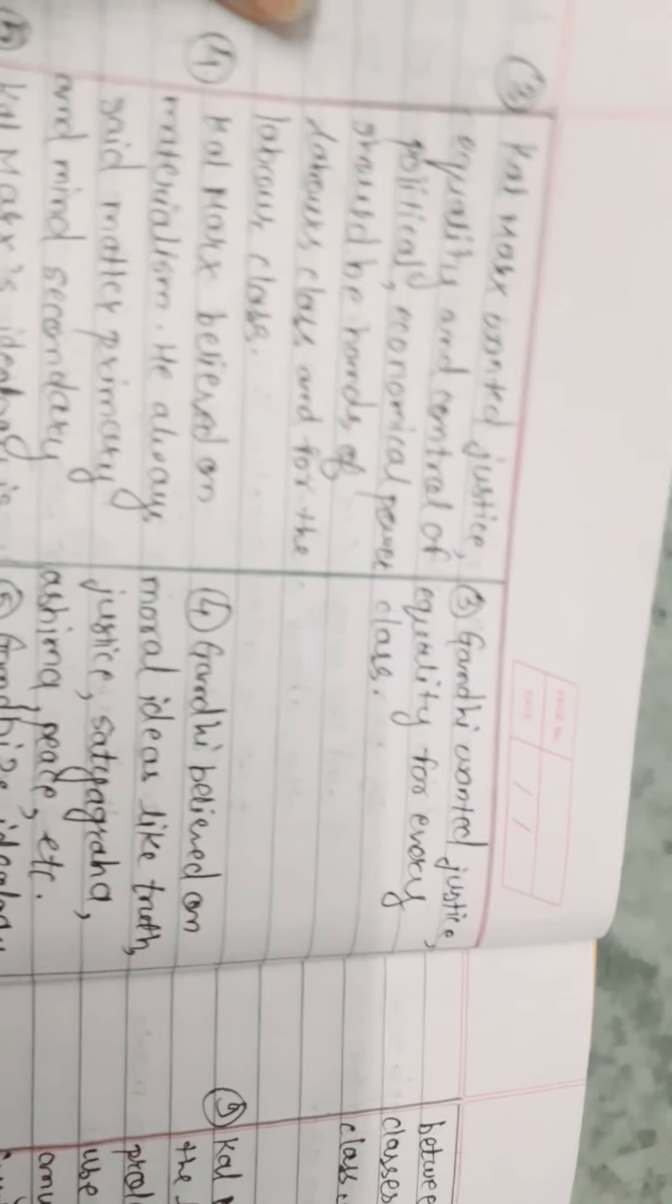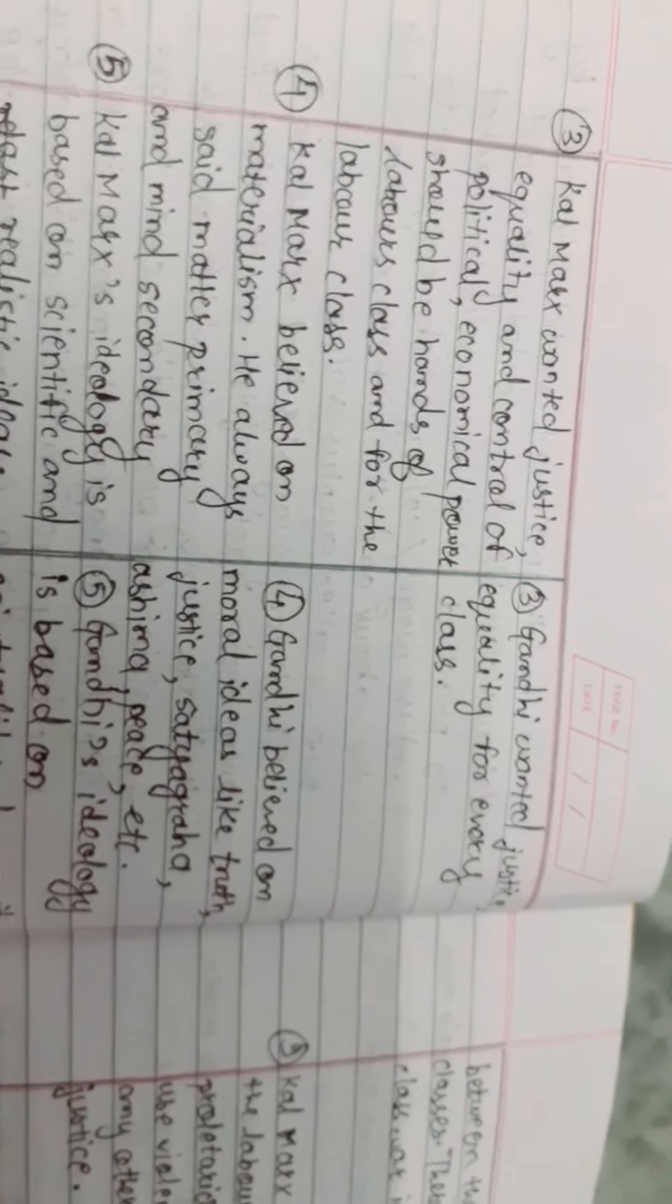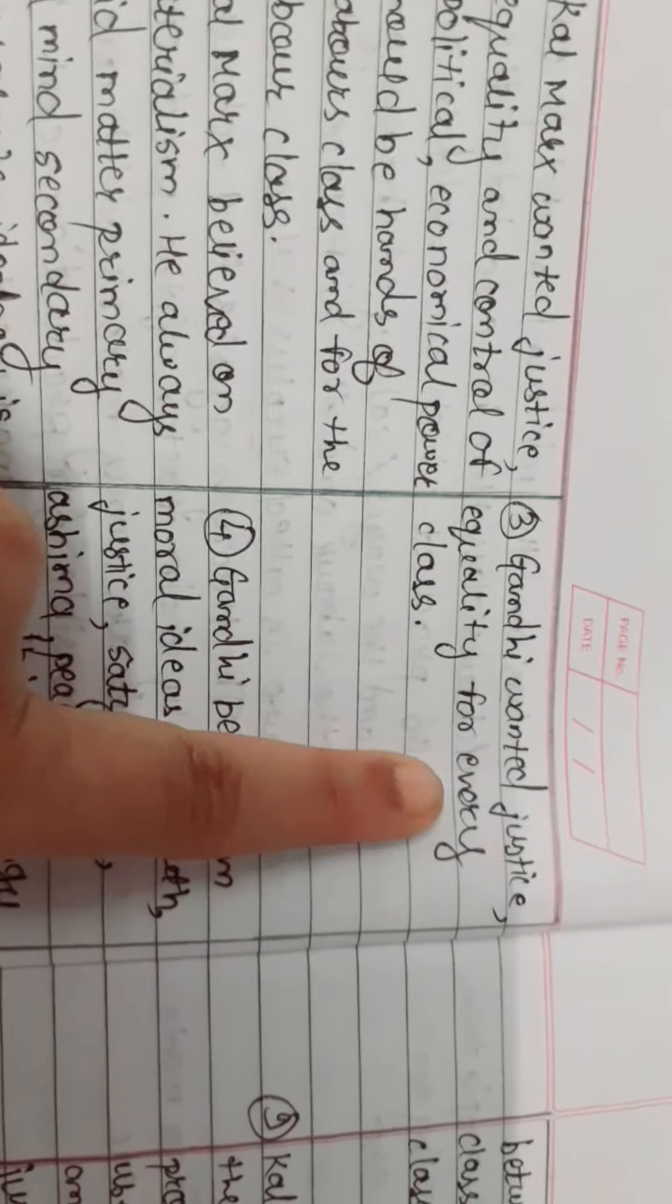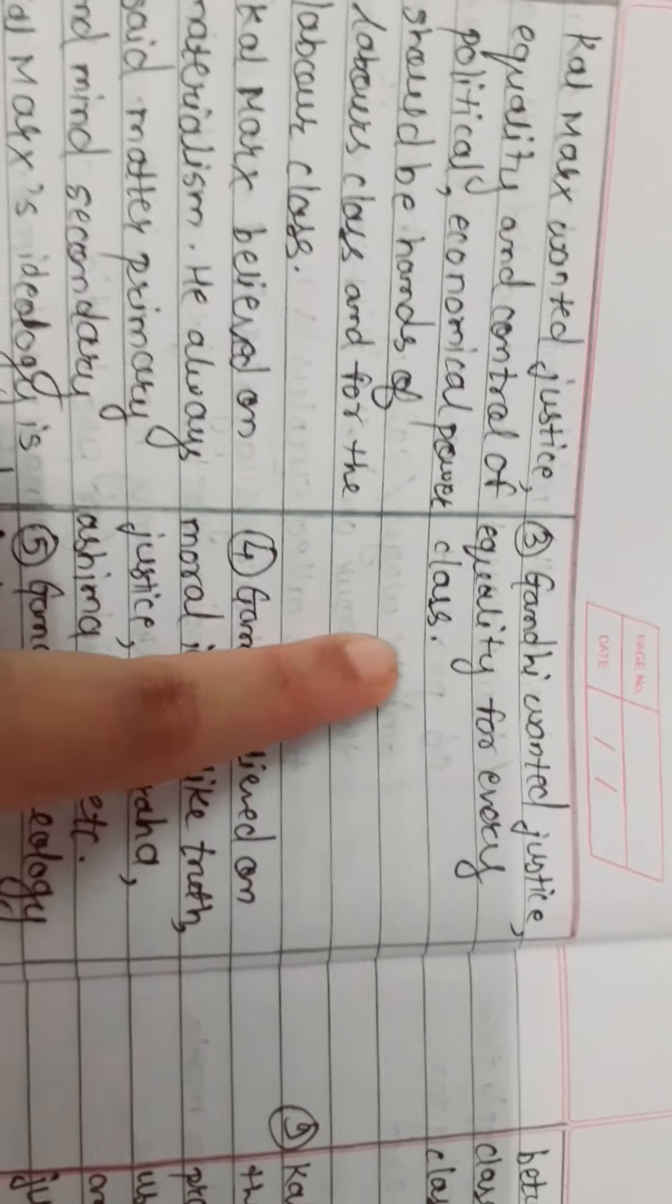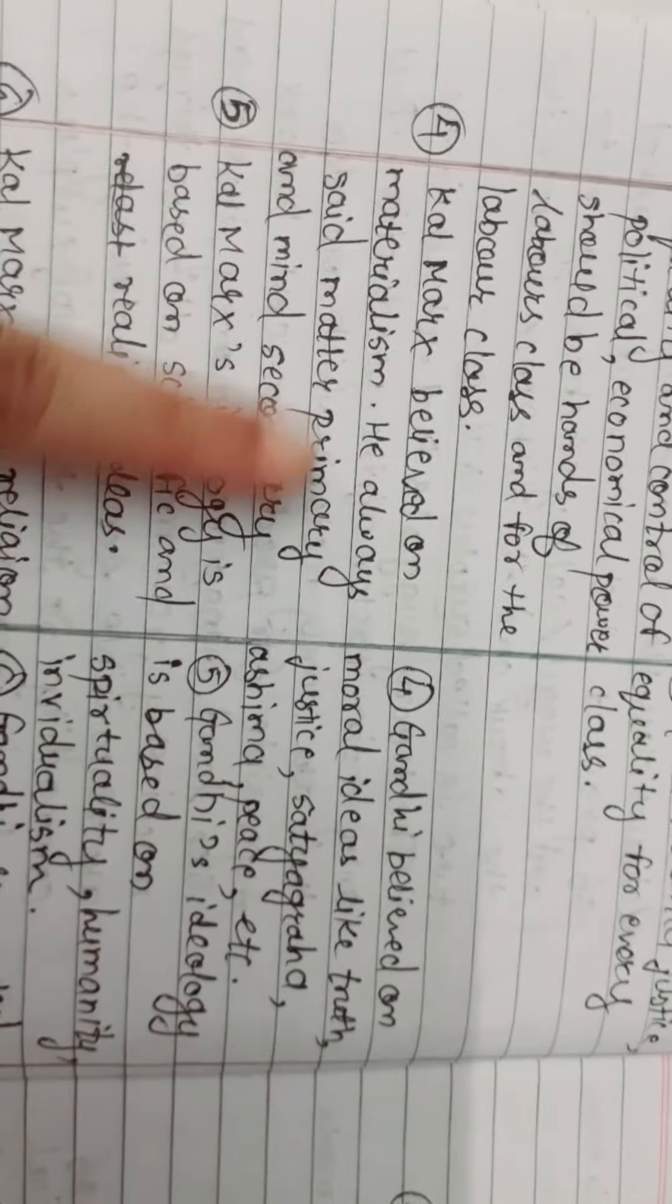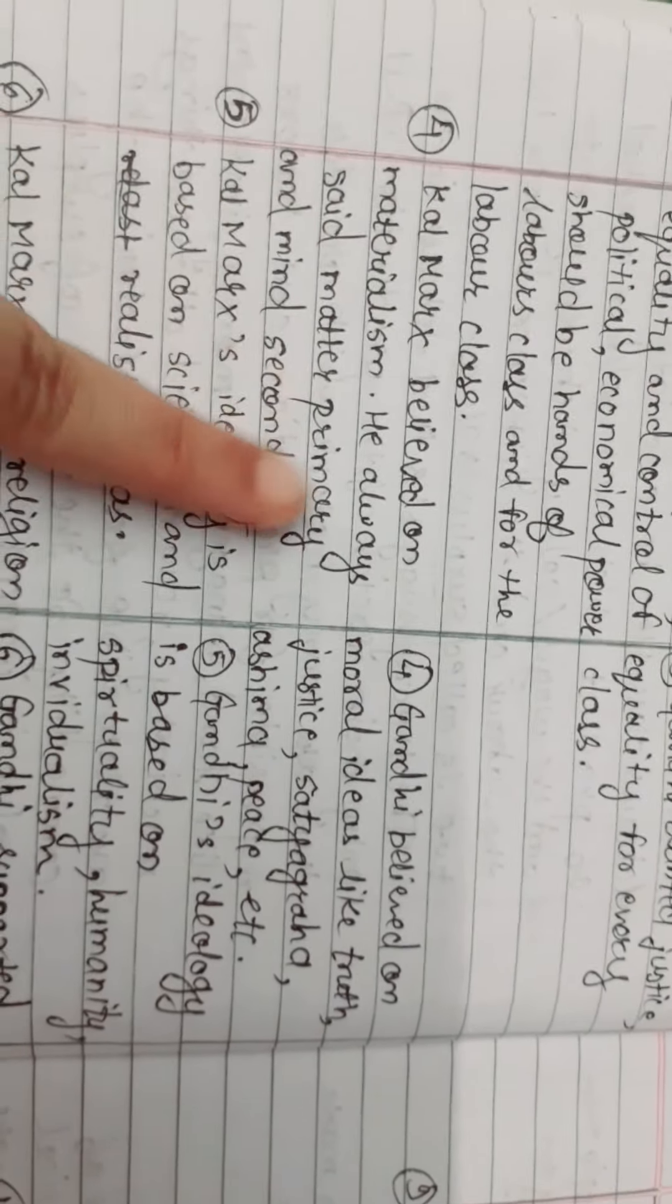Karl Marx wanted justice, equality, and control of political and economical power should be in the hands of the laborer class and for the labor class. Gandhiji wanted justice and equality for every class.